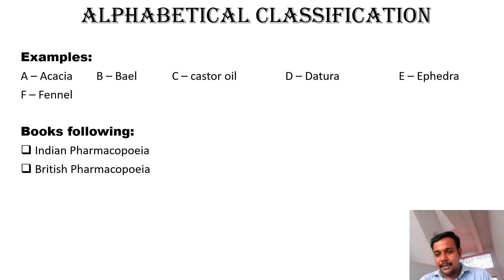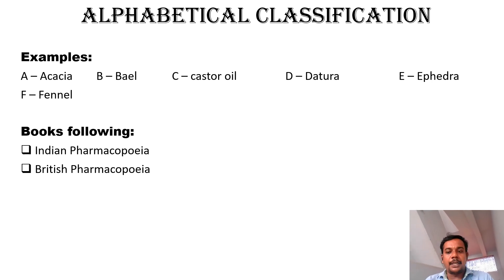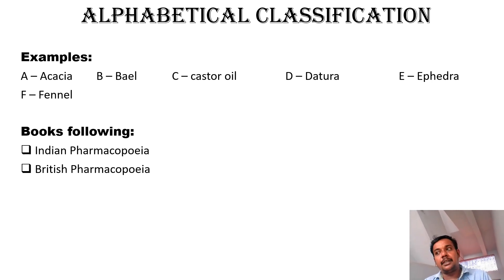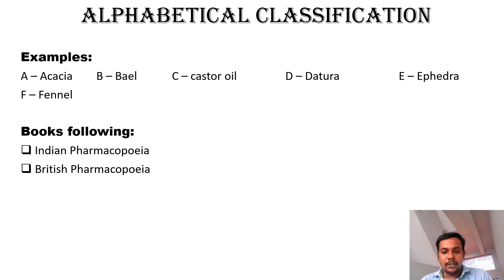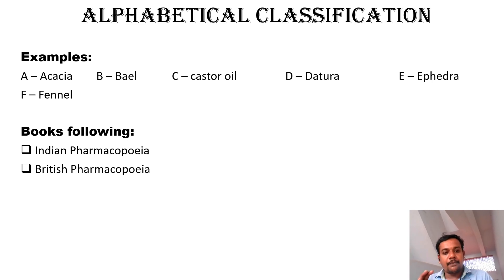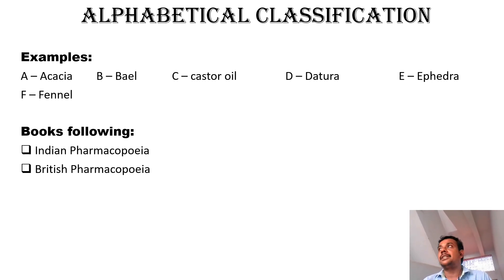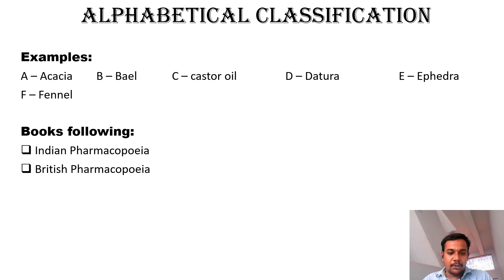For example, if you are classifying crude drugs using English, we classify from A to Z — writing crude drugs for A, then B, and so on up to Z. Based on whatever language is used, we classify according to that language's alphabetical order. Regarding standard books following this classification: all pharmacopoeias available in the world follow the alphabetical system of classification. You can go to a college library and find it in the Indian Pharmacopoeia itself — drugs starting with letter A come first, then B, then C, and so on.